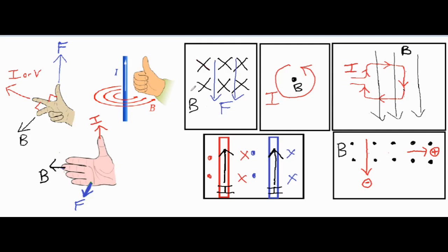Using the right palm rule for our first question: our fingertips are going into the screen, we twist so our palm is facing downwards with these blue arrows, and then our thumb would be pointing this way. That direction is the direction of the current or velocity of the charged particles.